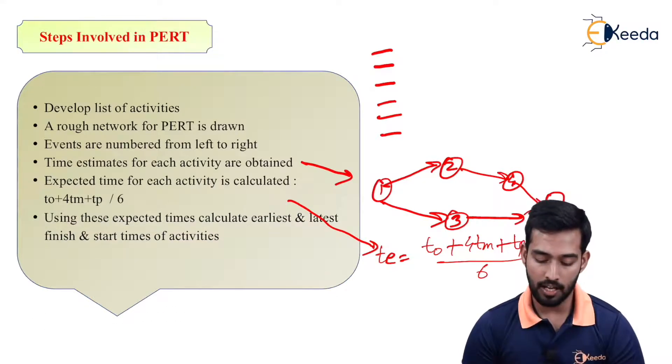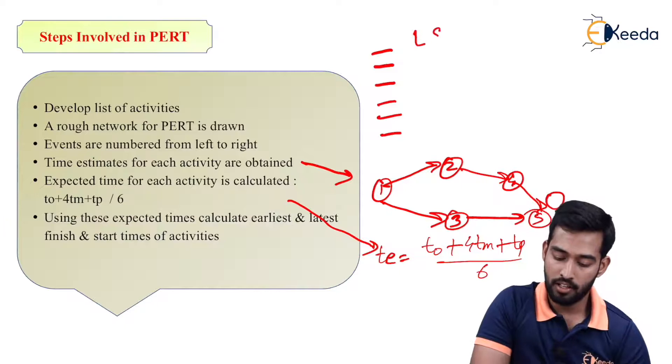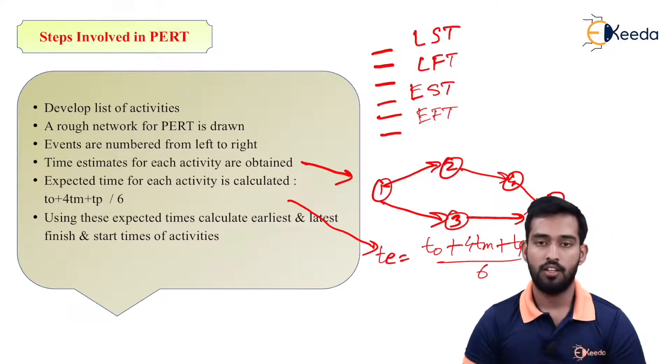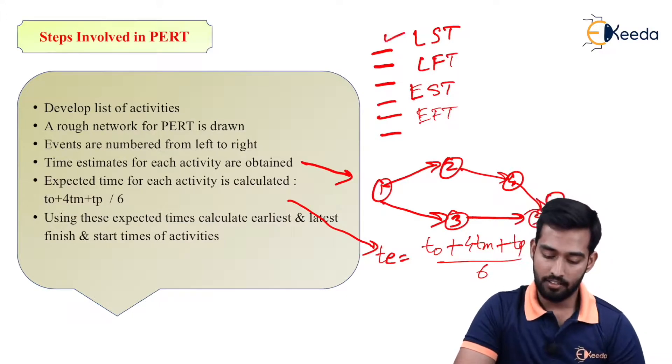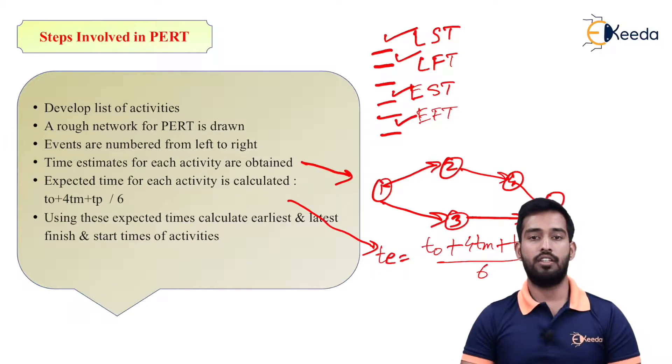Then using this expected time calculation, earliest and latest starting times we have to calculate. So we have to calculate LST, LFT, then your EST and EFT for that particular event. This is your latest start time, latest finish time, early start time, earliest finish time.